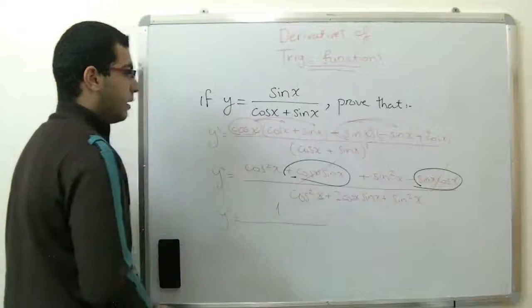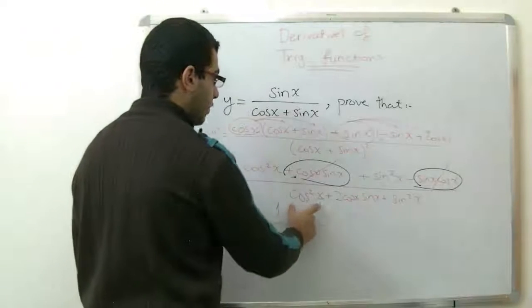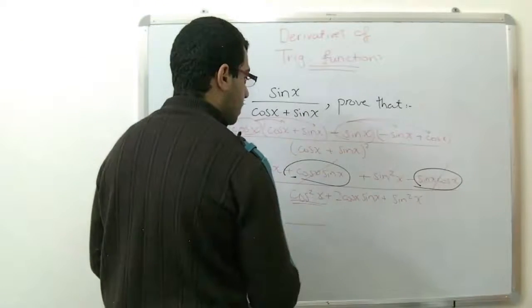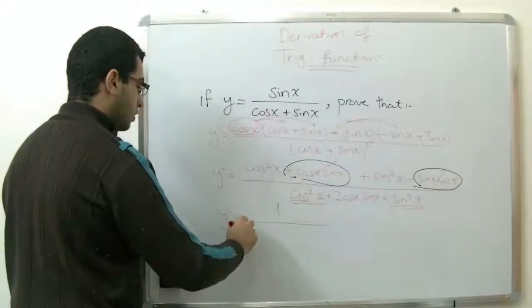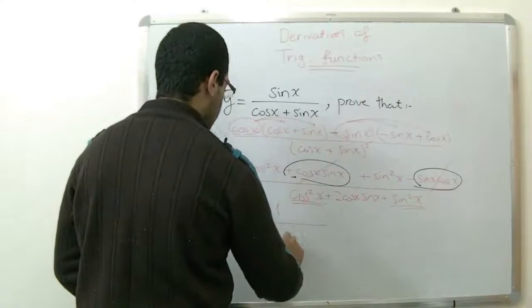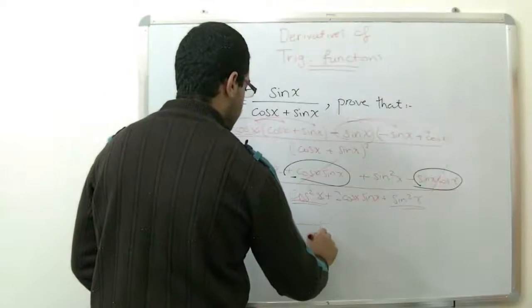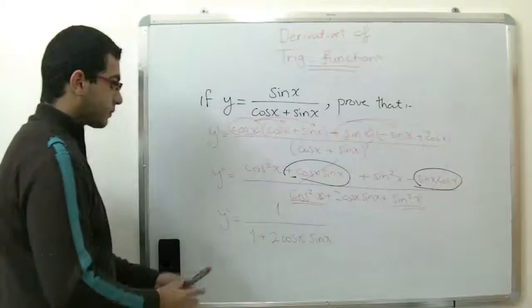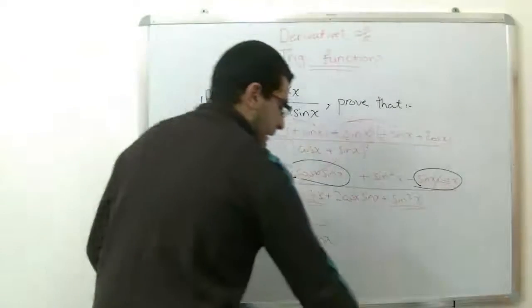In the denominator, we have also cosine squared x plus sine squared x, also equals 1, plus 2 cosine x sine x. This is the last thing.